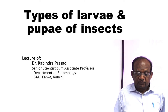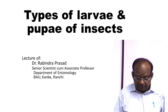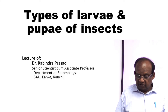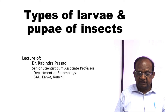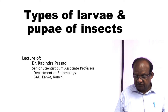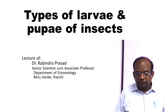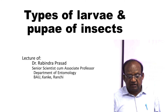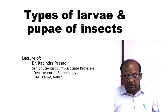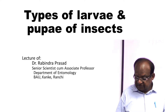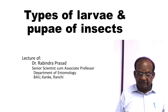As we know, insects normally possess four developmental stages: egg, larva, pupa, and adult. Larva is the second stage and pupa is the third stage of the insect in their developmental stages.